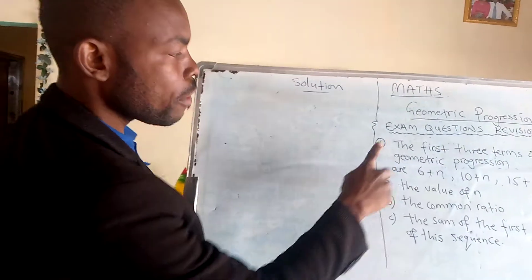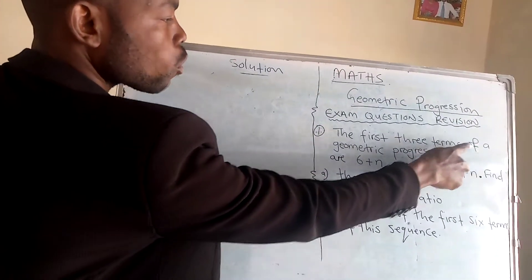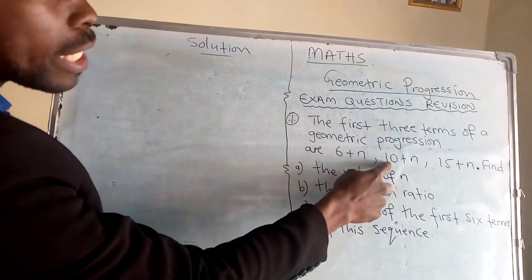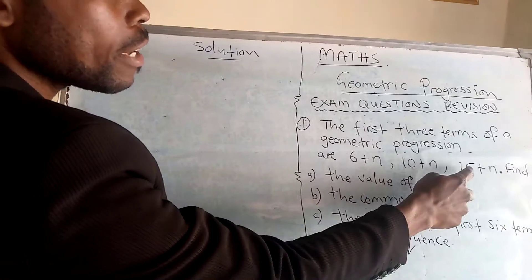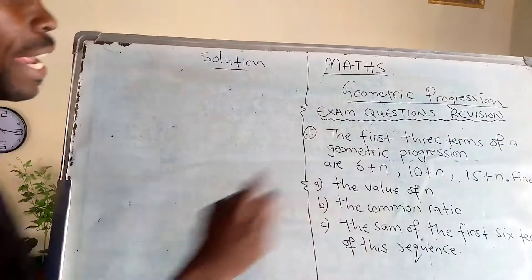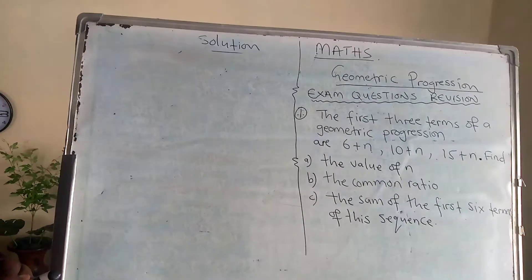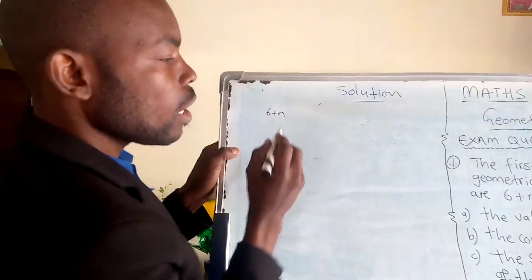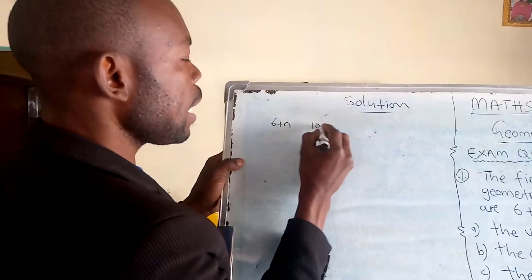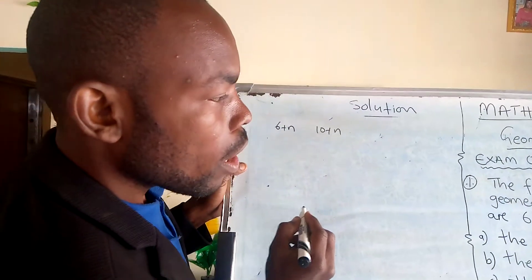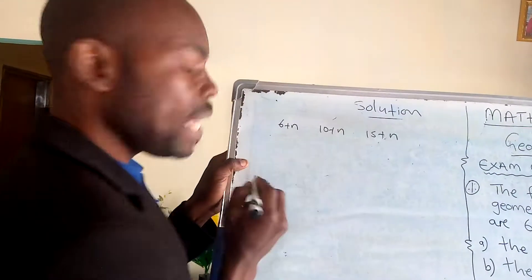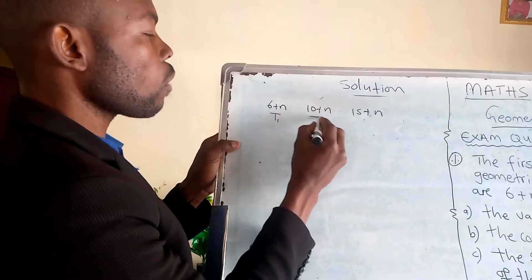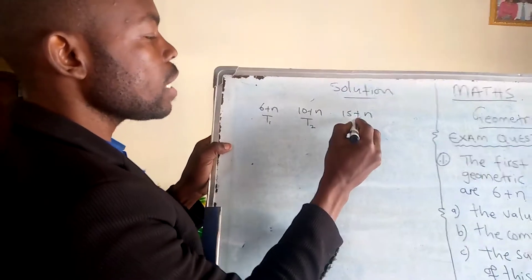So the first question is like this. The first three terms of a geometric progression are 6 plus n, 10 plus n, and 15 plus n. Find the value of n. So the first term is 6 plus n, the second term is 10 plus n, and the third term is 15 plus n.